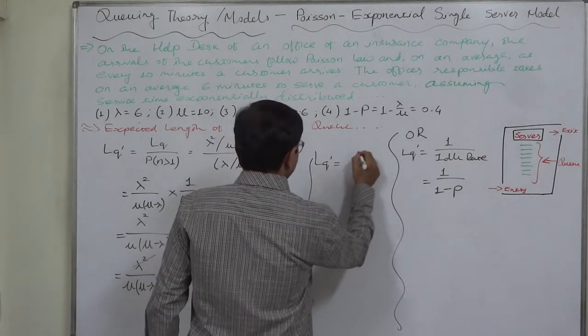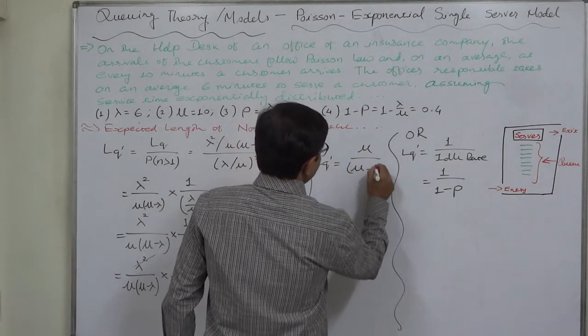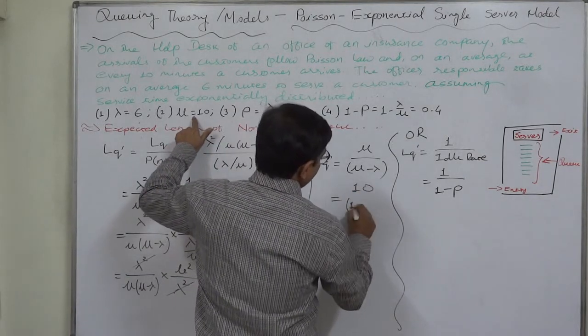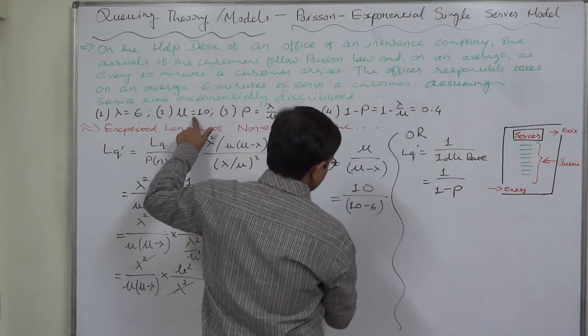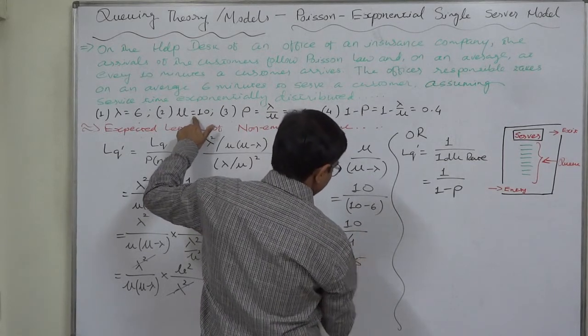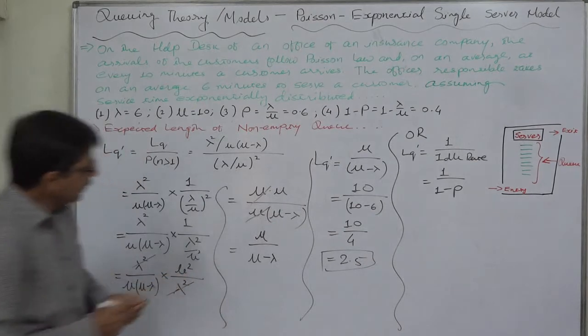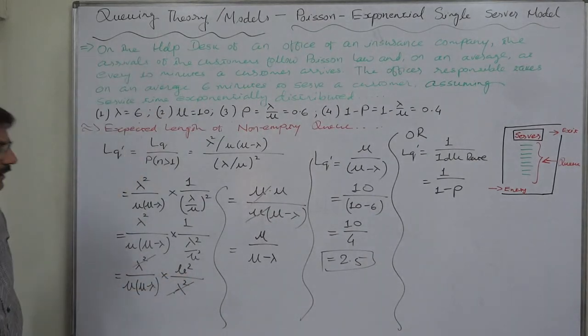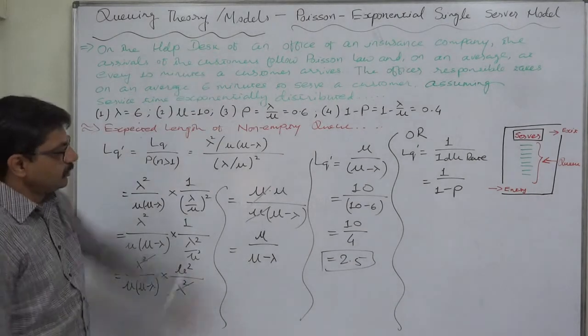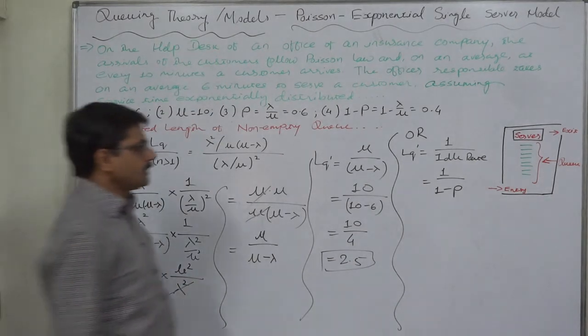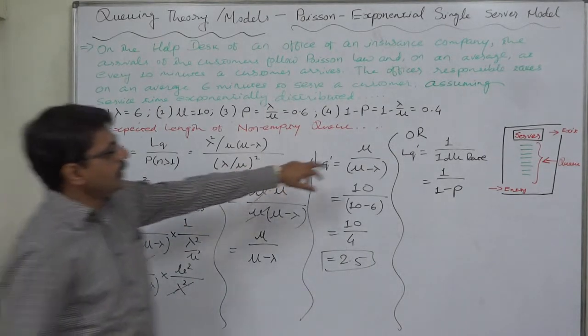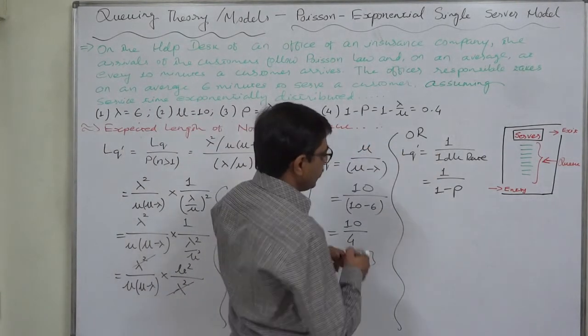LQ dash equals to mu upon mu minus lambda. Mu is 10, mu minus lambda is mu minus 6, 10 by 4, that is 2.5. So expected number of customers in the non-empty queue, and that is 1 upon idle rate.